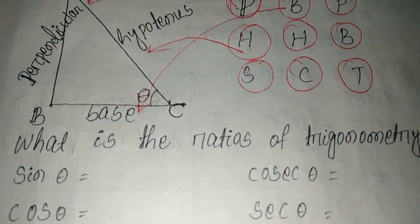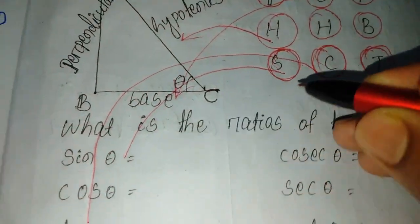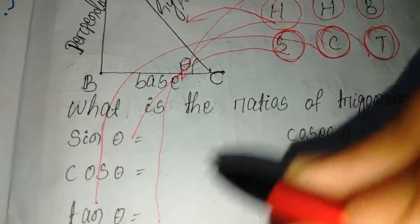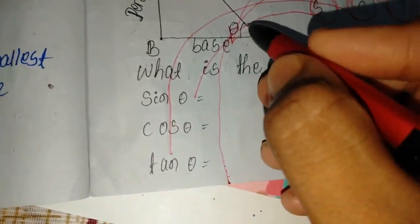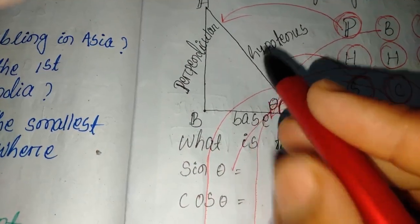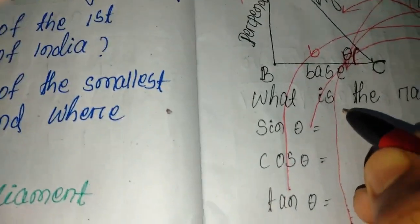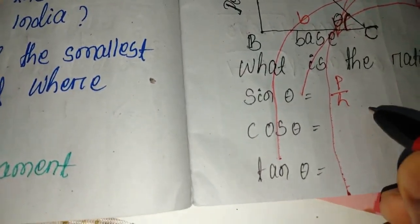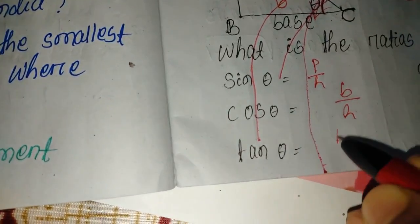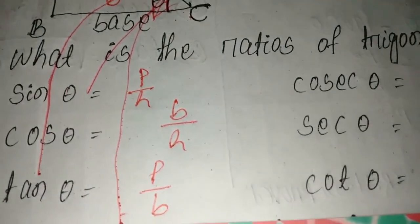What is the ratio of Trigonometry? Sona Chandi Tor: S for sin theta, C for cos theta, and T for tan theta. Sin theta equals perpendicular by hypotenuse, so P by H. Cos theta equals base by hypotenuse, so B by H. Tan theta equals perpendicular by base, so P by B. The other three ratios are cosec theta, sec theta, and cot theta, which are the reciprocals of each.